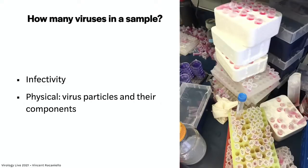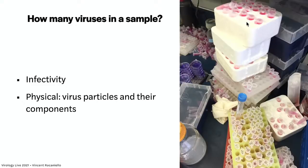If you've grown your virus, you want to know how many viruses you have. We ask: how many viruses are in our samples? We have multiple ways of figuring this out. We can measure infectivity — we will talk about that for sure — or you can do physical assays for virus particles or their components. The infectivity assays are the ones that actually measure infectious virus; everything else does not, and that's an important distinction. Here is a photo of Amy's bench in the laboratory — tubes containing samples of virus and some stained plaque assay plates.